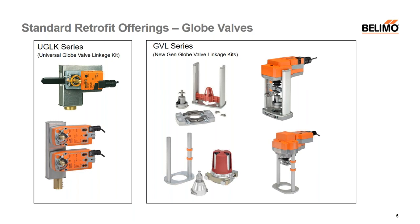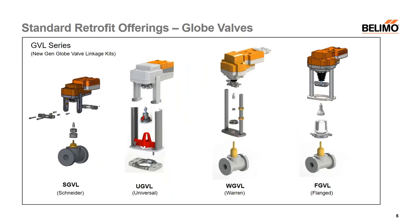Let's start with our standard retrofit offerings — the globe valve retrofit kits. On the left, those kits are part of our UGLK series. This is our rack and pinion style linkage, which enables us to use our standard air side actuators. Through the use of a rack and pinion, we translate the rotational motion of the actuator into a linear up and down motion to install them on a globe valve. On the right, you see the GVL series — our universal kits, designed to fit a wide range of valves, whereas the UGLK series is much more specific to a particular valve manufacturer, model number, and size.